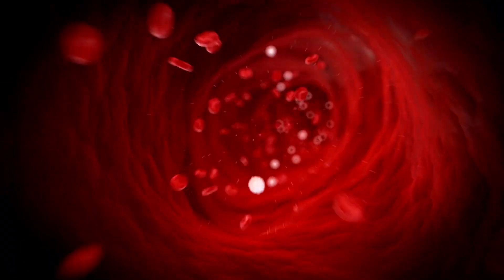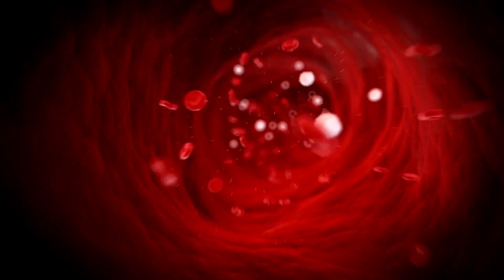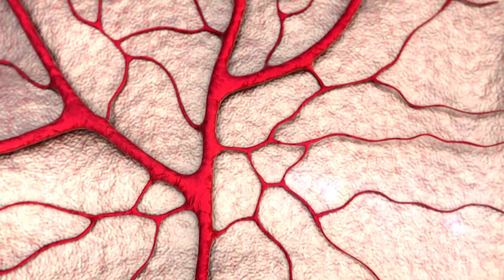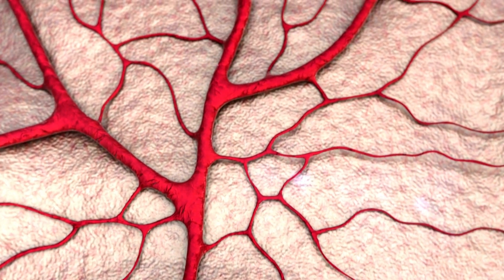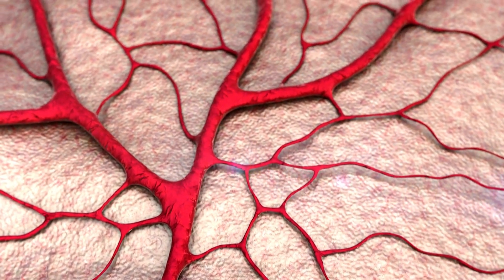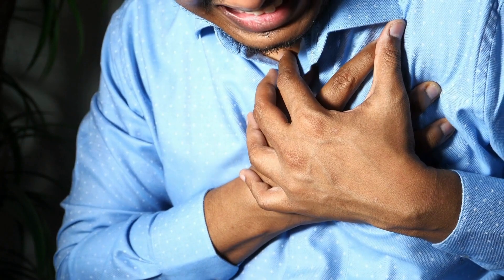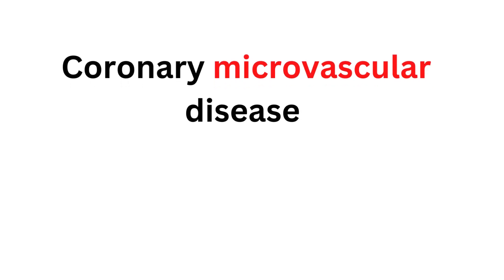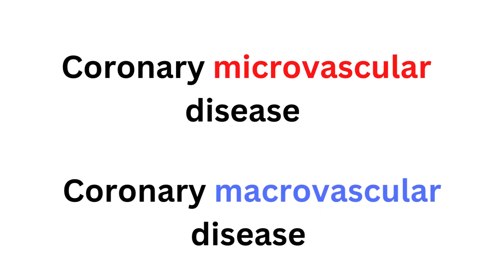Having too much sugar in the blood is a symptom of diabetes, which is caused by inadequate insulin synthesis. Nerves and blood vessels, especially those leading to the heart, can be damaged by high blood sugar over time. The two most common causes of heart attack risk are coronary microvascular disease and coronary macrovascular disease, both caused by damage to the blood vessels.